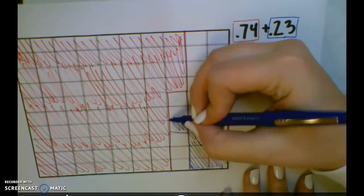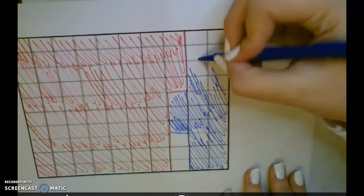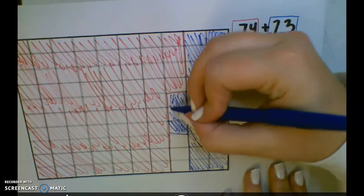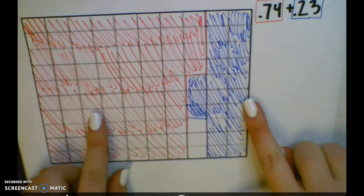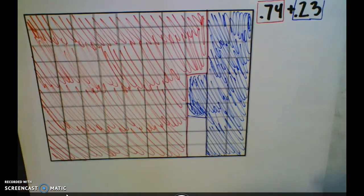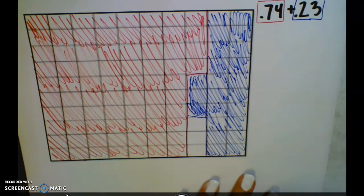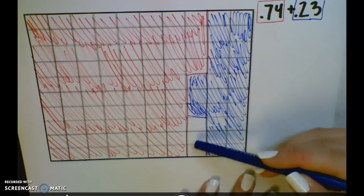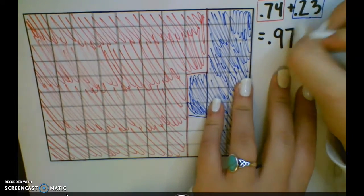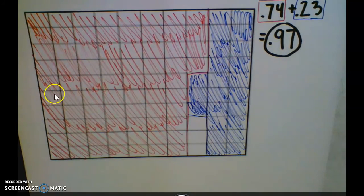Okay, and my final step is to add together all the squares instead of going through and counting each individual one, which you could do if you wanted. I know that this entire grid is 100 small cubes. If I take 100 and subtract what's not shaded, which is three, I get 97 hundredths, and that is how you show the addition model for decimal addition.